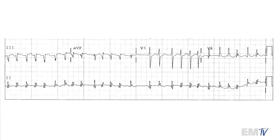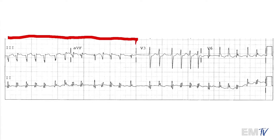Right off the bat, the first thing you're probably realizing is how fast the rate is in this particular 12-lead. Now remember, we're looking at a 10-second strip here. So unless your base-six math is really good, the first thing you want to do is cut this into a six-second strip. So what we'll do is take the first two groupings here — each one equals 2.5 seconds, giving us five seconds total — then we'll add five large boxes and have our six-second strip.